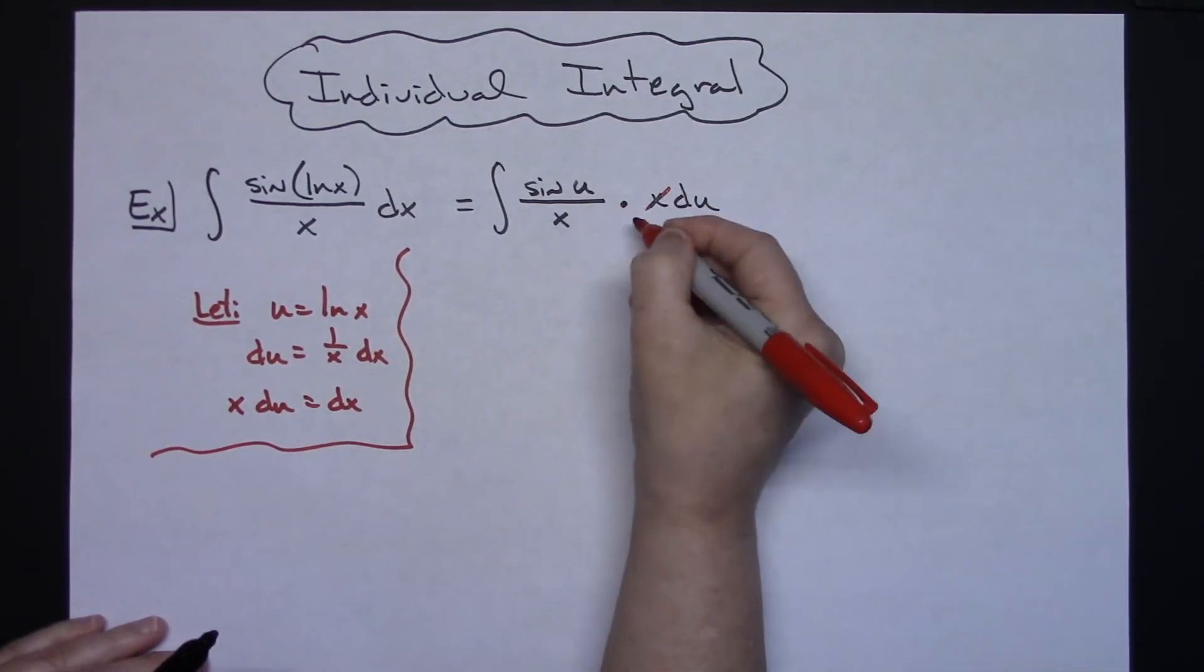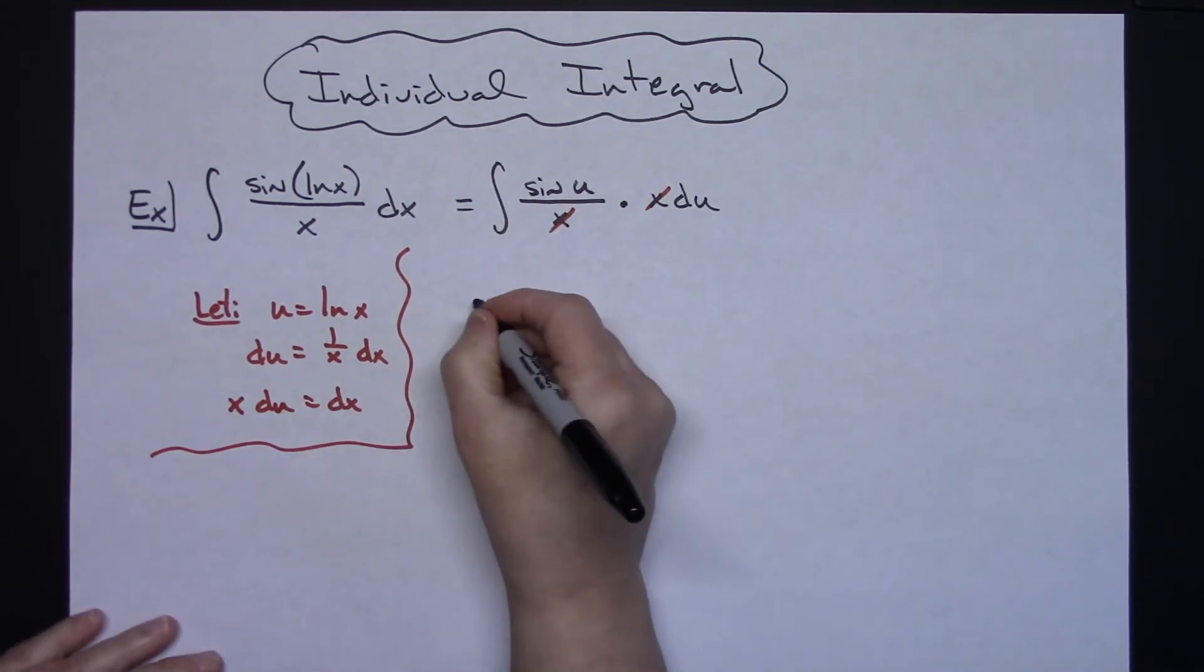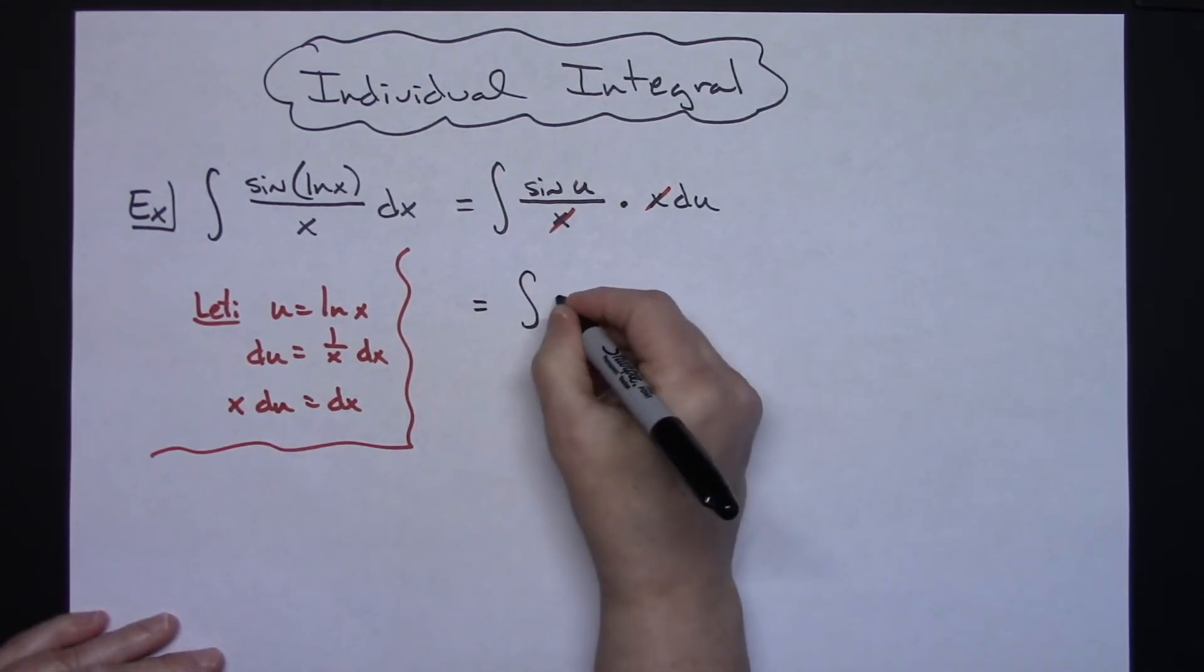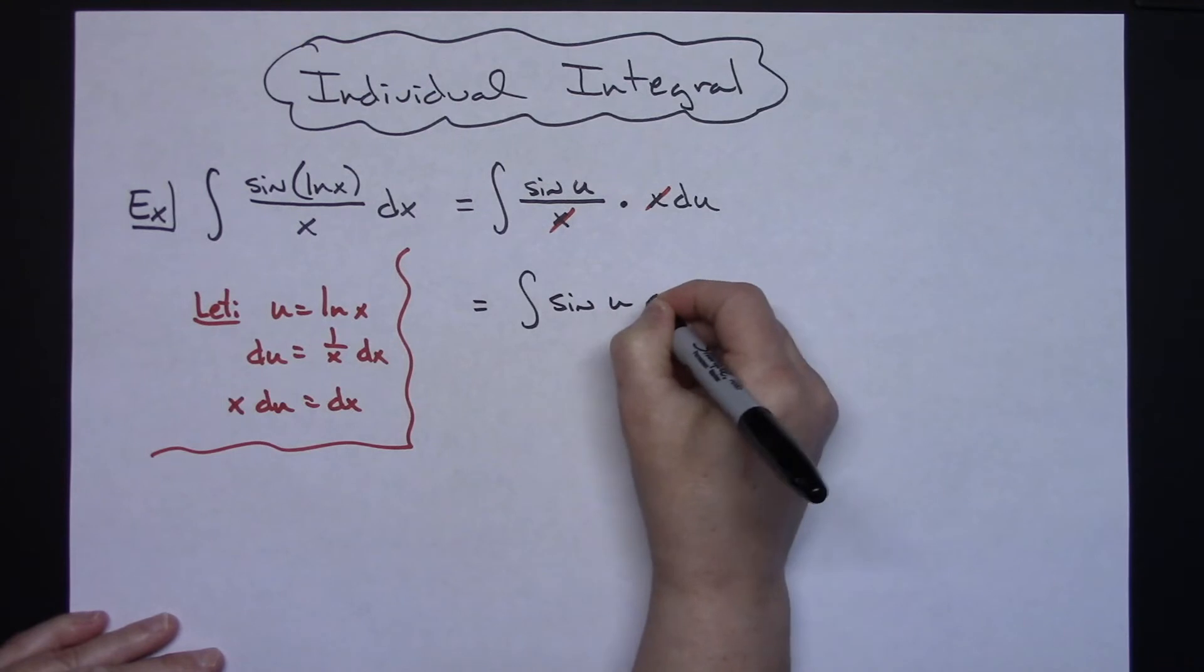That's going to allow us to cancel out the two x's and then it becomes a straightforward integration of sine u du.